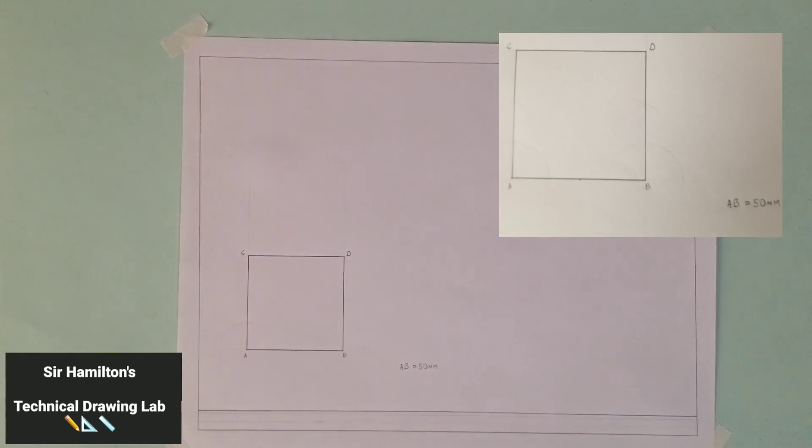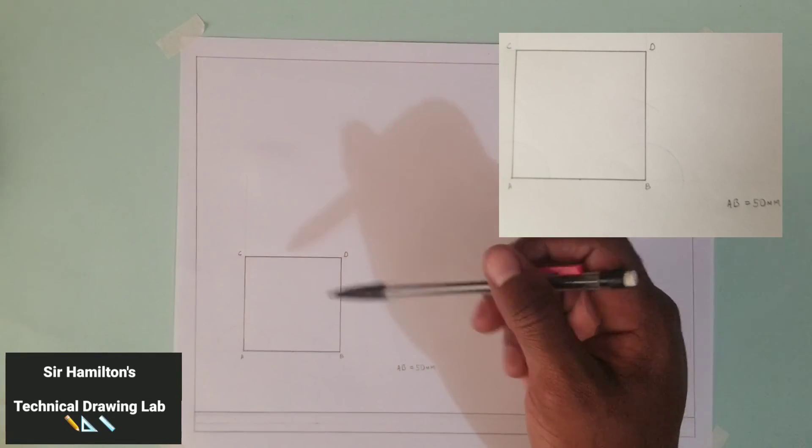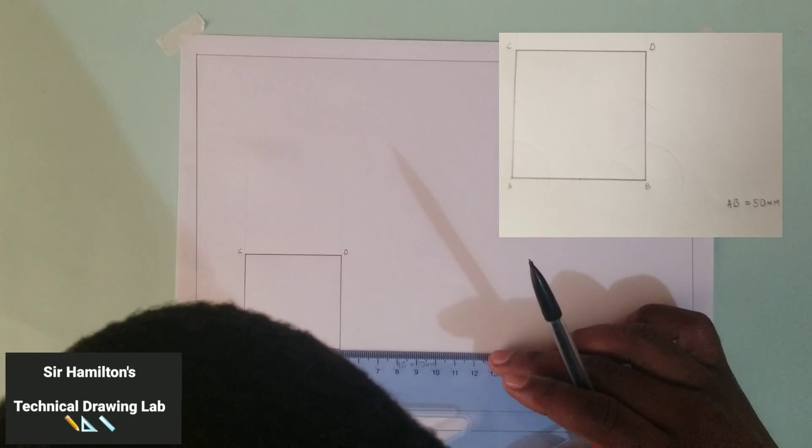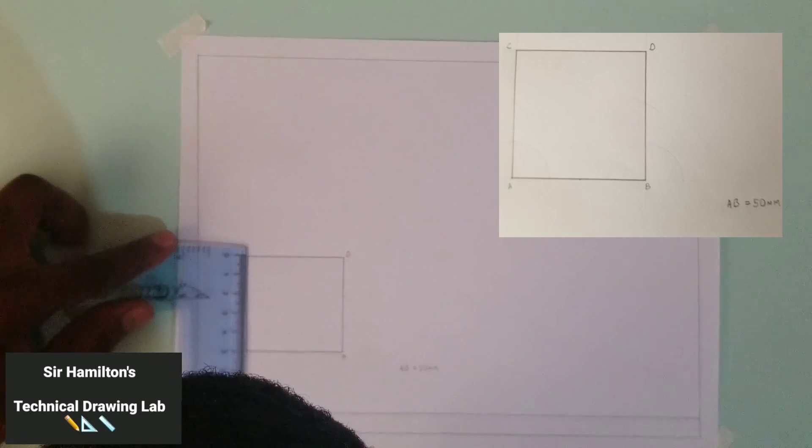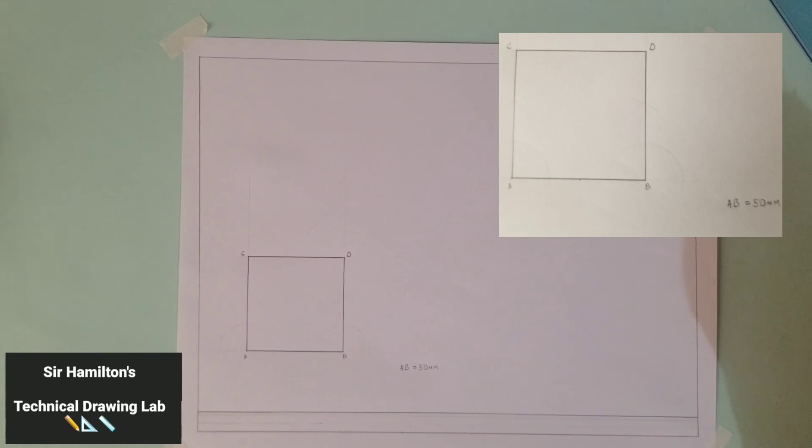And there we go, we have points A, B, C, and D with all sides being equal and all angles being equal at 90 degrees. We have constructed our square, which is the first and simplest form of quadrilateral.